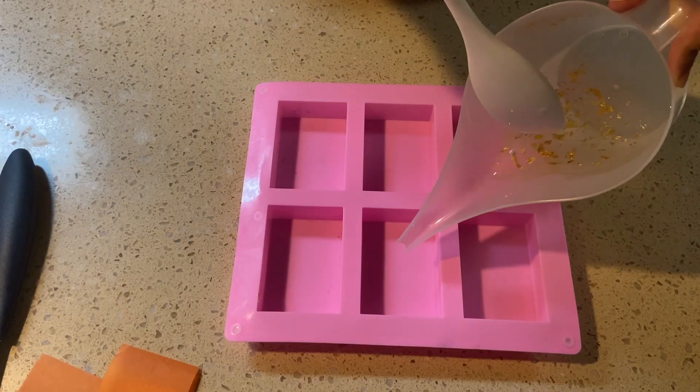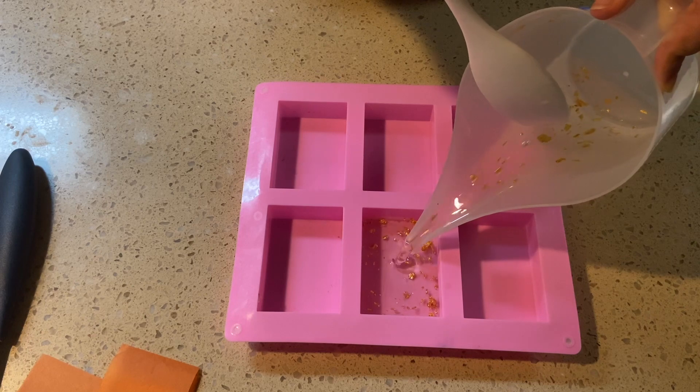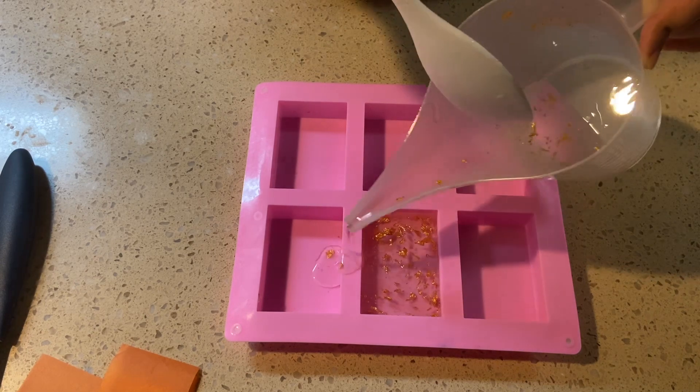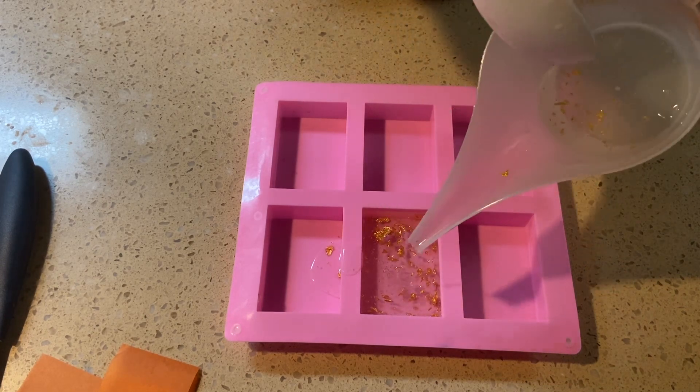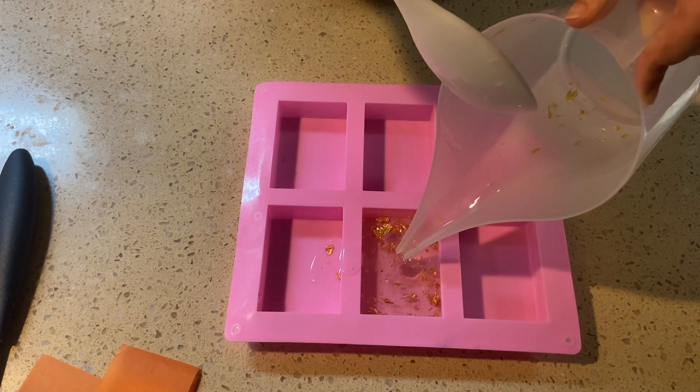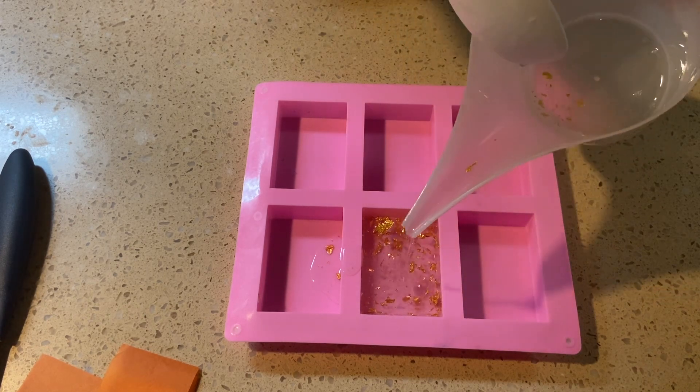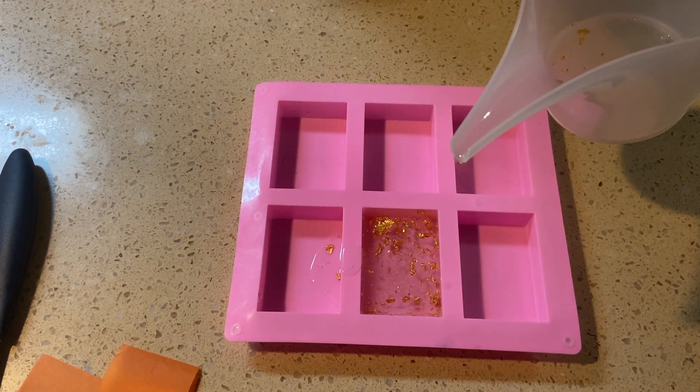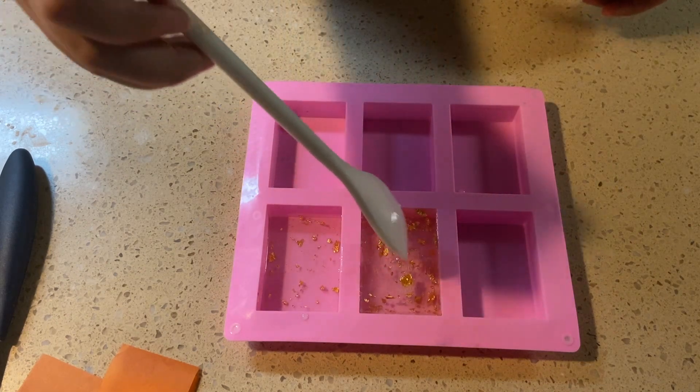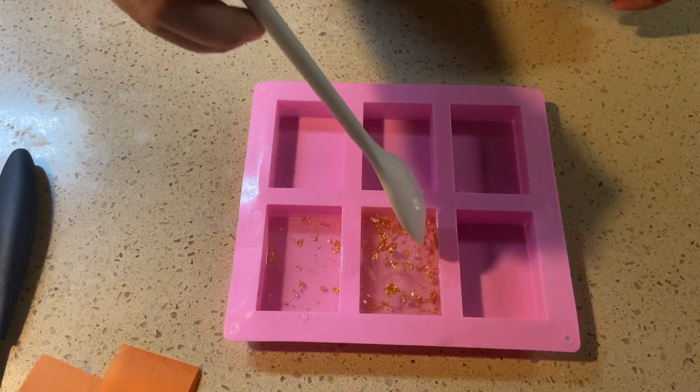After I was happy with how my mixture looked, I went ahead and poured into my mold. I then just used my spatula to maneuver around the gold leaf so it was evenly distributed.